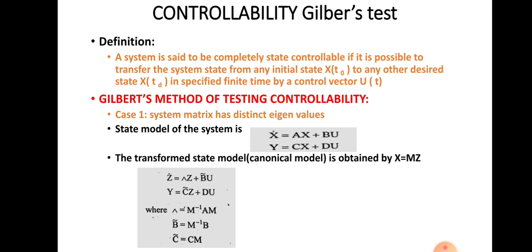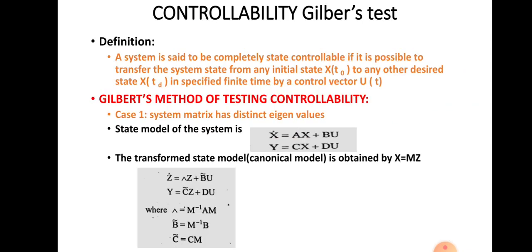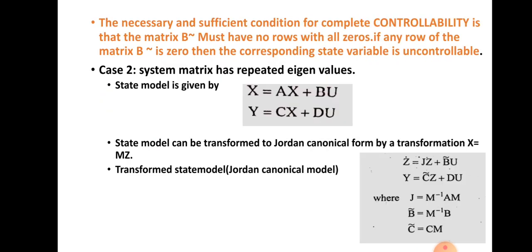This was Case one with distinct eigenvalues. Now, if eigenvalues are repeated or have multiplicity, the modal matrix will be different and we use the Jordan canonical form. In this case, the system matrix cannot be diagonalized but can be transformed into Jordan canonical form. The state equation is x-dot = Ax + Bu and output equation is y = Cx + Du.